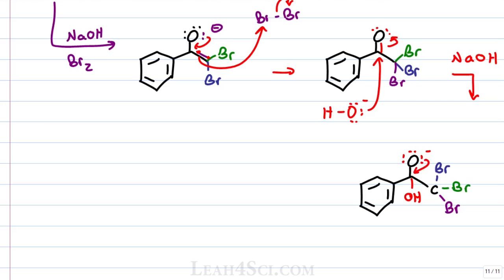This entire thing is very unstable and so the negative oxygen's electrons will collapse back down to reform the carbonyl but instead of kicking out the OH, it kicks out the best leaving group which in this case is the CBr3.